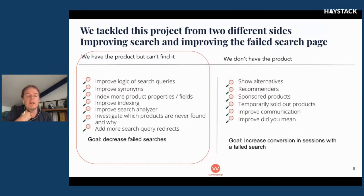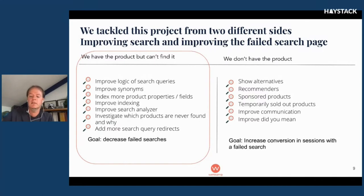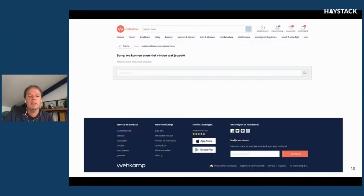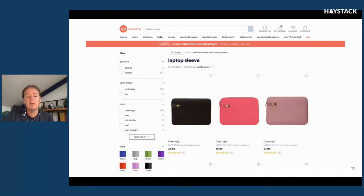Here on the left you can see the improving the search part, and this is mainly to lower the chance that you end up on this failed search page. This is basically relevance engineering, and that's what we did. This is an example of something we could improve in this way: people are looking for 'laptop hoose' — hoose is the Dutch word for sleeve — but unfortunately we have them in the system as 'laptop sleeve', so this is something we can improve.